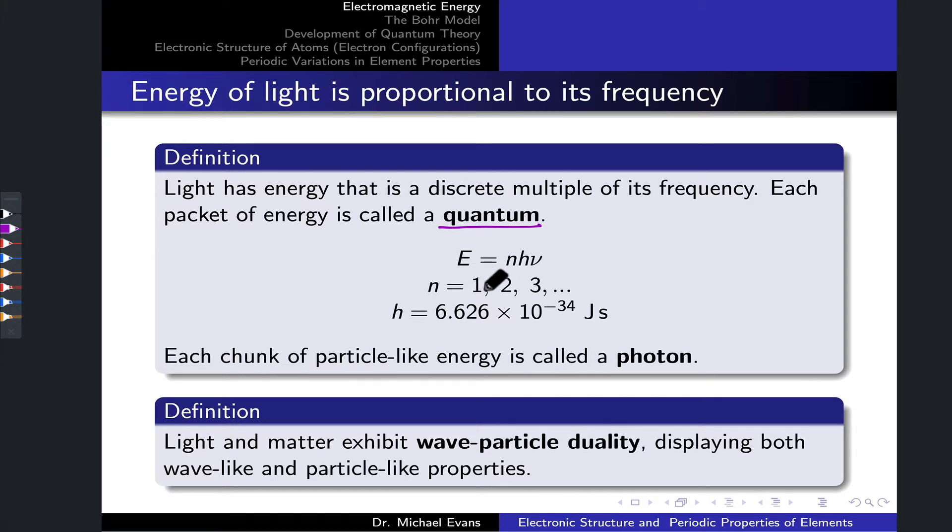In equation form, the energy of some sample of light is equal to an integer multiple or discrete multiple (that's what this n value is for) of a constant h times the frequency ν. That constant h essentially relates energy to frequency in a fundamental way. That constant has a value of 6.626 times 10 to the negative 34 joule seconds, and this is known as Planck's constant.